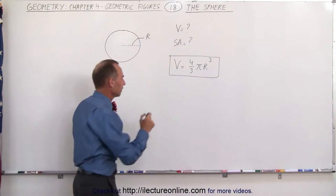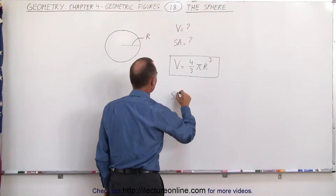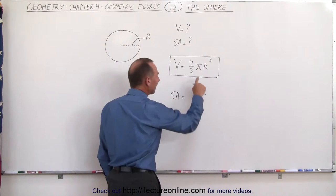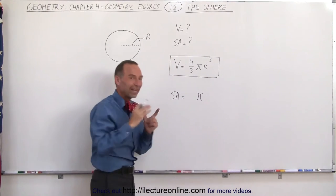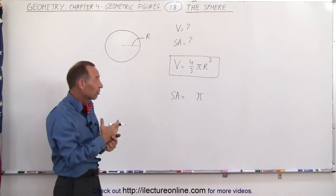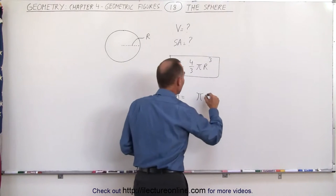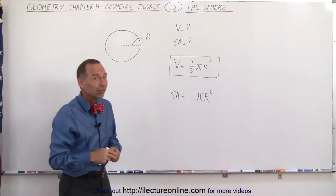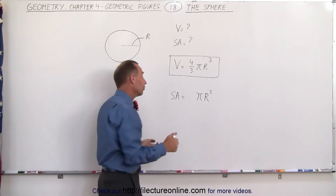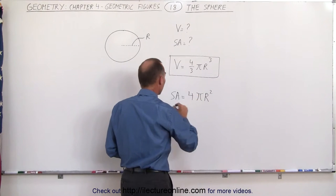But now for the surface area. The surface area is equal to, well again, we expect to find the pi in there, and since it's the surface area, area is associated with squared, we know that it needs to be r squared. Now the question is what number goes in front there, and that you simply have to memorize, and it turns out the number is 4.